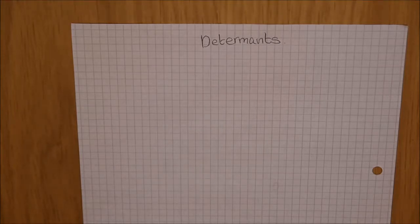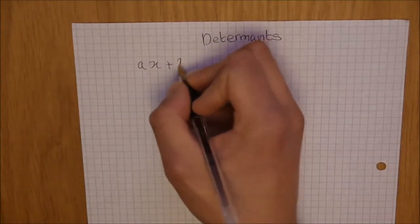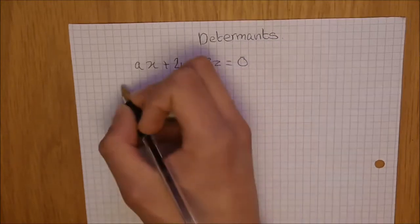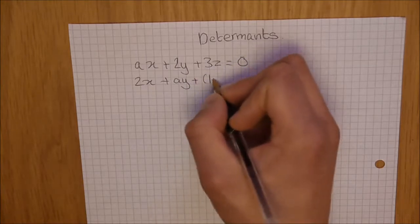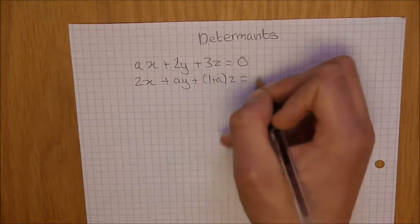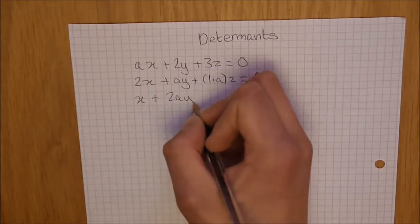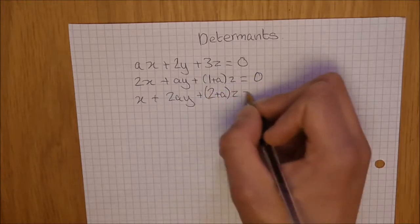So here to give a good example is this. If we have ax plus 2y plus 3z equals zero, 2x plus ay plus 1 plus az equals zero, and x plus 2ay plus 2 plus a lots of z equals zero.